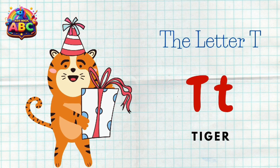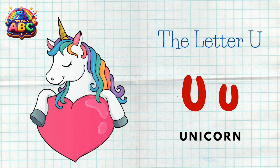The letter T. T is for tiger. The letter U. U is for unicorn.